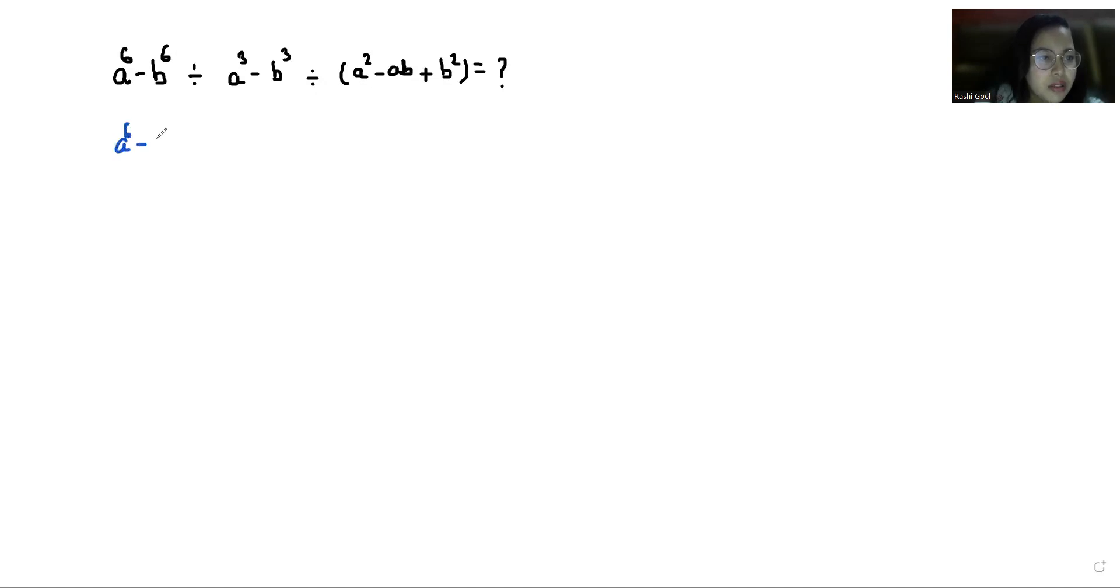So a^6 - b^6, by replacing this division sign with multiplication, I can write this as 1 by a^3 - b^3. Similarly, I'm going to remove this multiplication sign also and it's 1 by a^2 - ab + b^2.